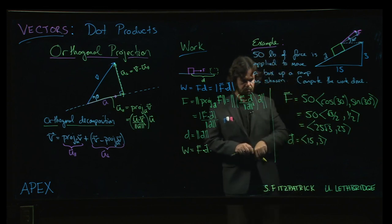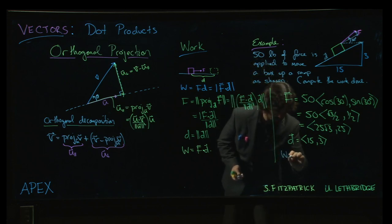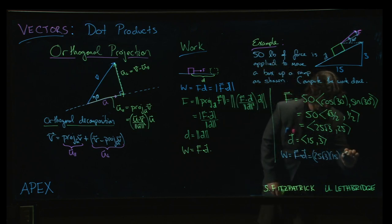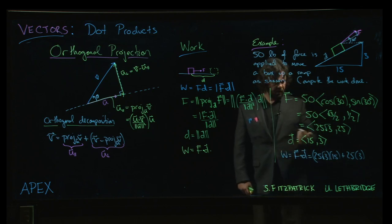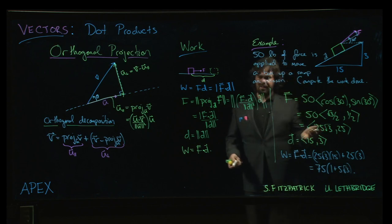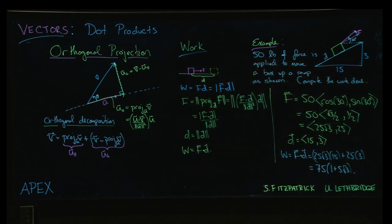And the work then, the work is just the dot product. So the work will just be F dot D. So it's going to be 25 root 3 times 15 plus 25 times 3. And I guess we could simplify that if we wanted to. It's 75 times 1 plus 5 root 3. I don't know if that's any simpler. If you want a decimal value, you can punch it into the calculator.